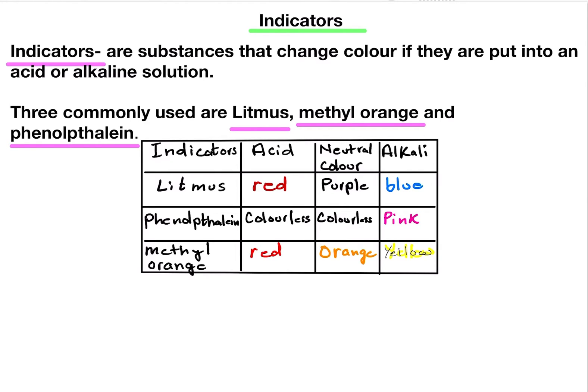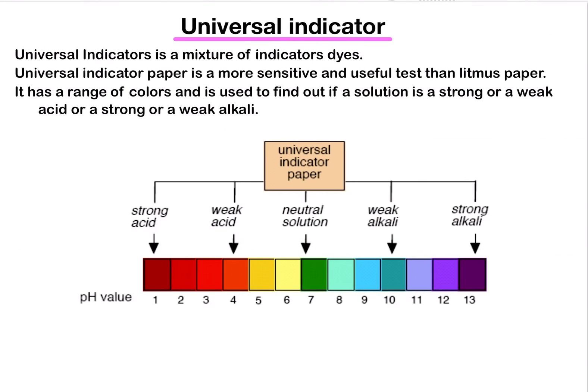Methyl orange's original color is orange. It turns red in the case of acid, and yellow in the case of alkali. Universal indicator is a mixture of indicator dyes.